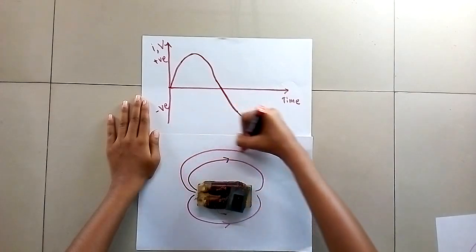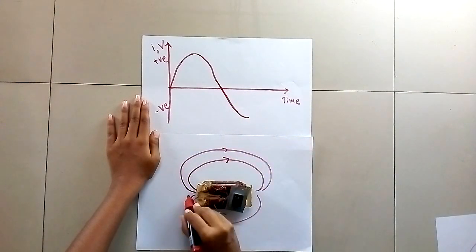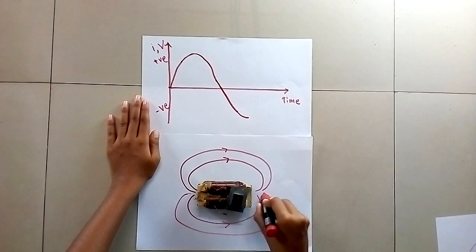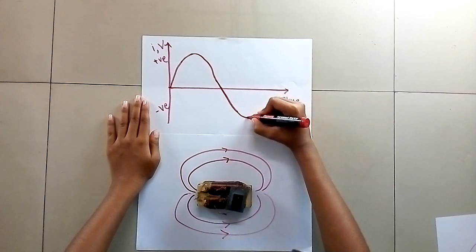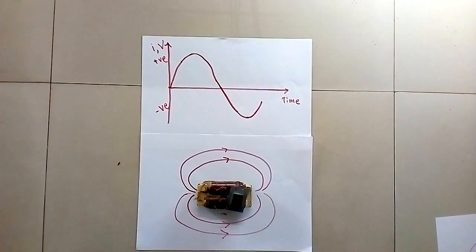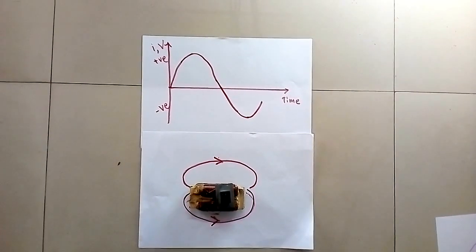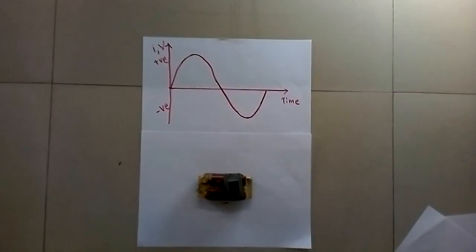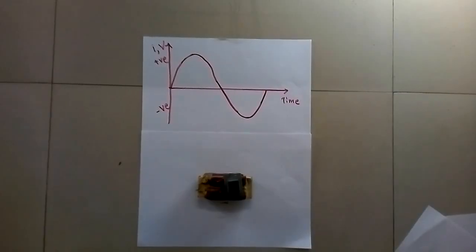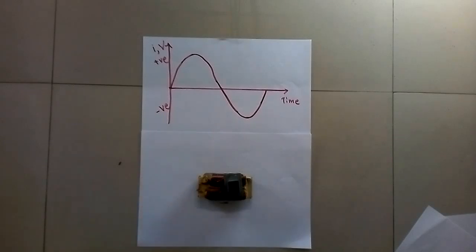As the voltage reaches its maximum in the reverse direction, the magnetic field produced also reaches a maximum in the reverse direction. As the voltage starts to decrease, the magnetic field produced also starts to decrease. And once the AC voltage reaches zero, the magnetic field produced also becomes zero.